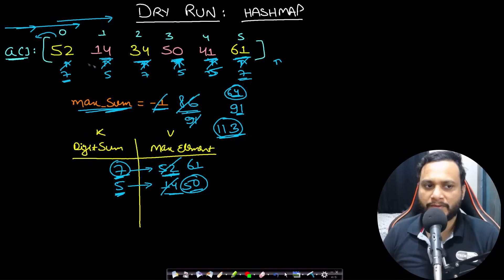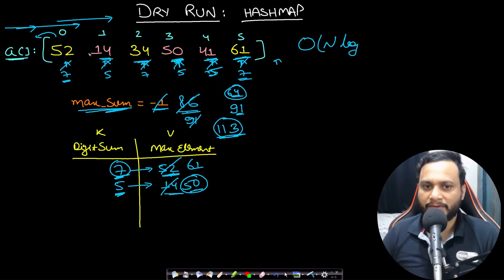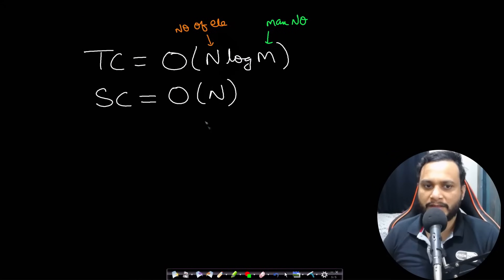In this optimal approach we iterate through the array exactly once — O(n) — and for each element we compute the digit sum in O(log m), where m is the maximum element in the array. So the overall time complexity is O(n log m) and the space complexity is O(n) due to the hash map.